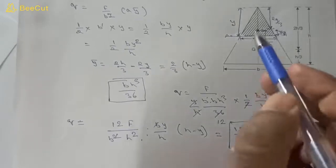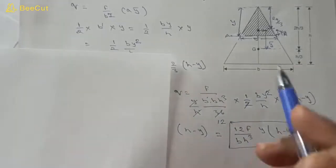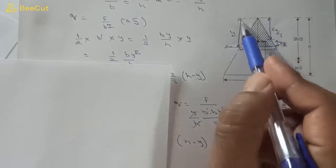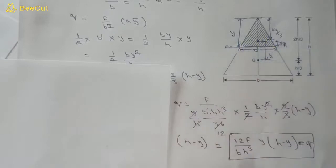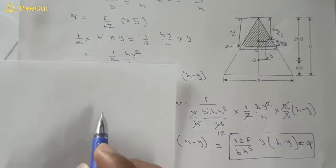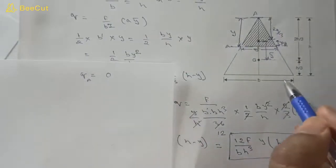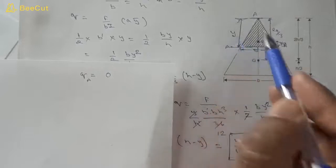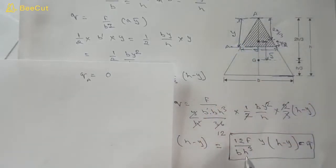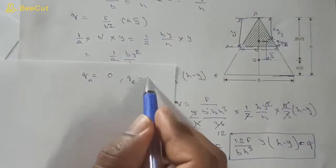Now we find shear stress at various points. At the top of the section, y = 0, so q = 12F/(bh³) * 0 * (h − 0) = 0. Therefore shear stress at point A (top) is zero. At the bottom, y = h, so q = 12F/(bh³) * h * (h − h) = 0. Shear stress at point B (base) is also zero.